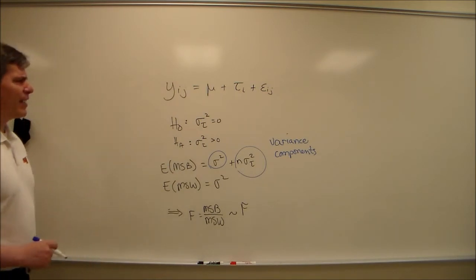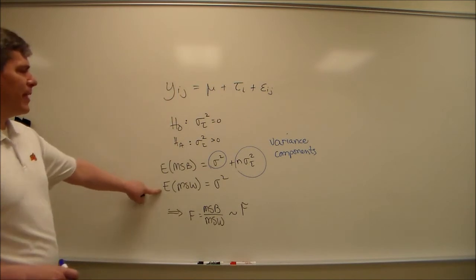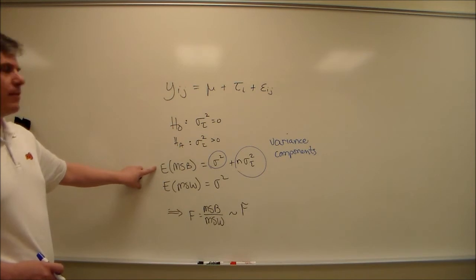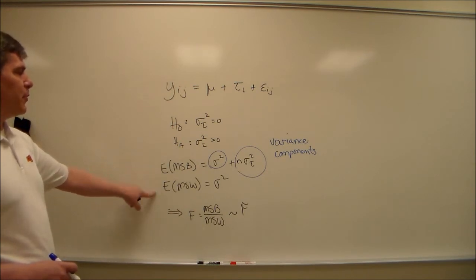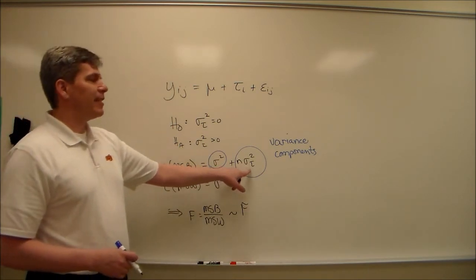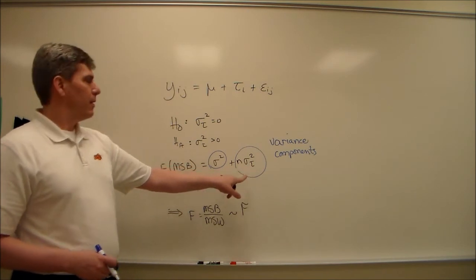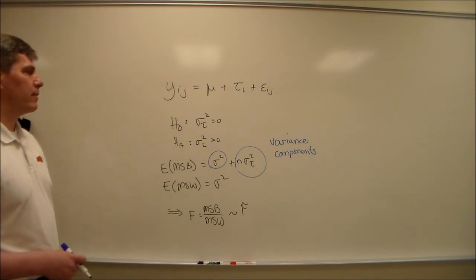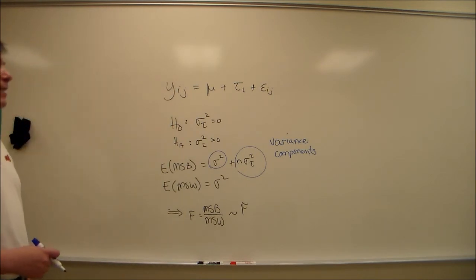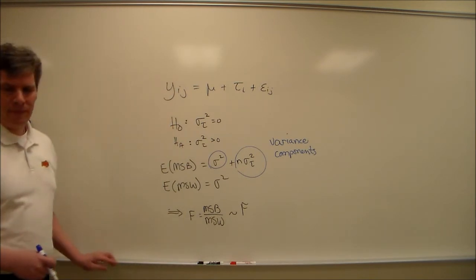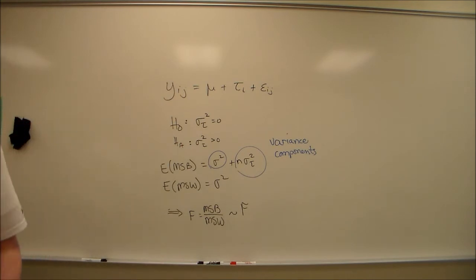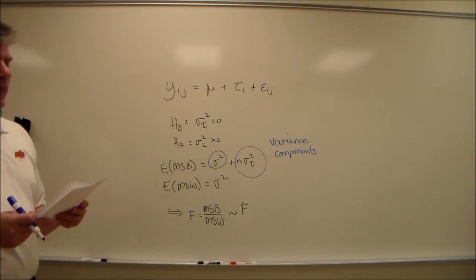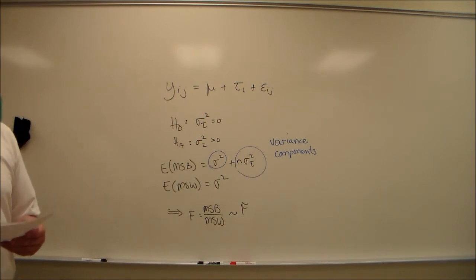And you can figure out how to estimate them. The first step would be to estimate what the mean squared within is, then to estimate what the mean squared between is. Now, if you subtract these two, you're just given an n sigma squared tau. We know n because the design is balanced, and that will allow us to solve for sigma squared tau. I actually have an example. This is example 6.26 on page 299.